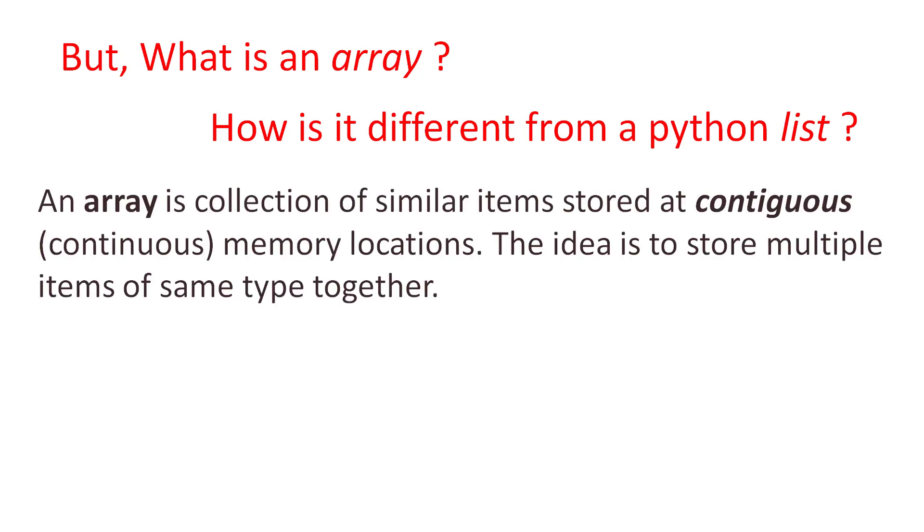But what exactly is an array? And how is it different from a Python list? Well, an array is a collection of similar items stored at contiguous memory locations. The idea here is to store multiple items of the same type together.